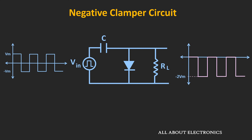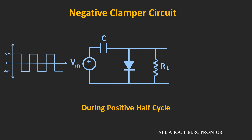Let us analyze this circuit and see how we will get this type of waveform. During the positive half cycle, the input to this circuit is equal to Vm volts, and due to that this diode will get forward biased. Considering the ideal diode, it can be represented as a short circuit, and effectively this resistor will also get short circuited. During the positive half cycle, this capacitor will get charged through this path and it will get charged to the peak value of voltage Vm. And during the positive half cycle, the output voltage Vout will be equal to zero.